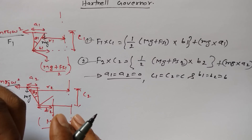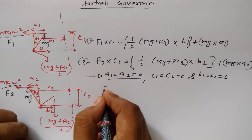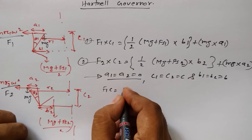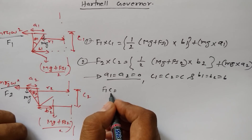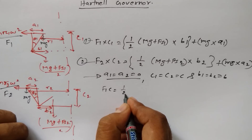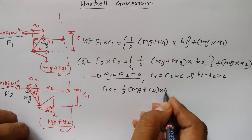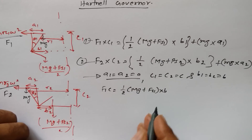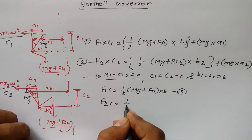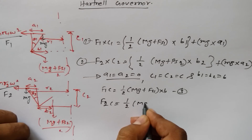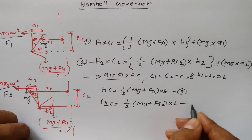After implementing all these conditions into the two equations, we get: f1·c = (1/2)(mg + Fs1)·b — this is equation 3, since c1 = c2 = c and a1 = 0. And f2·c = (1/2)(mg + Fs2)·b — this is equation 4.